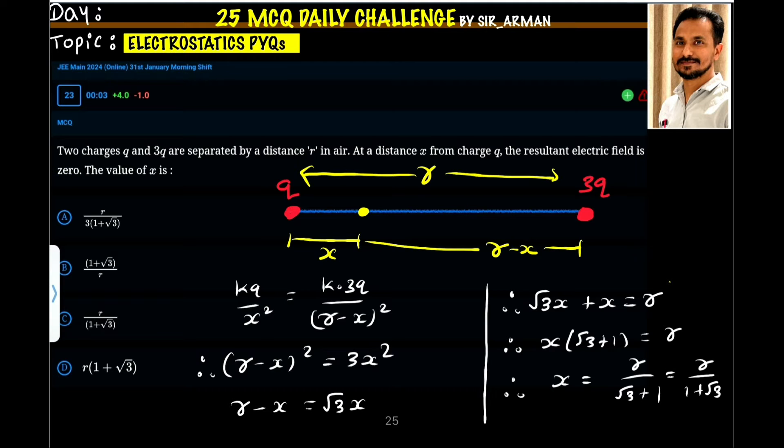As per the given situation, we have two charges Q and 3Q. And at a distance X from Q, the electric field is zero.